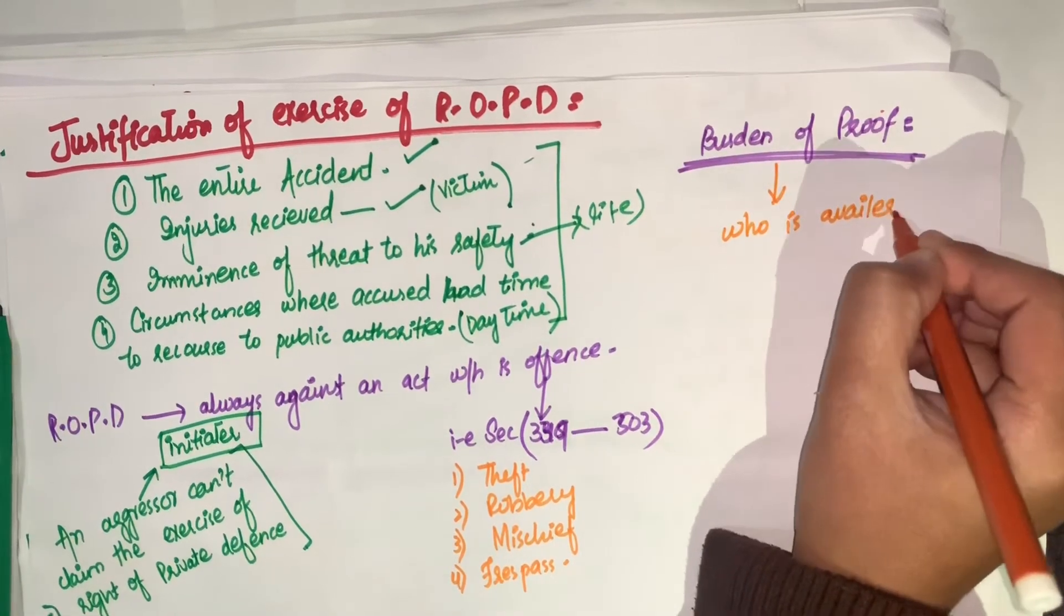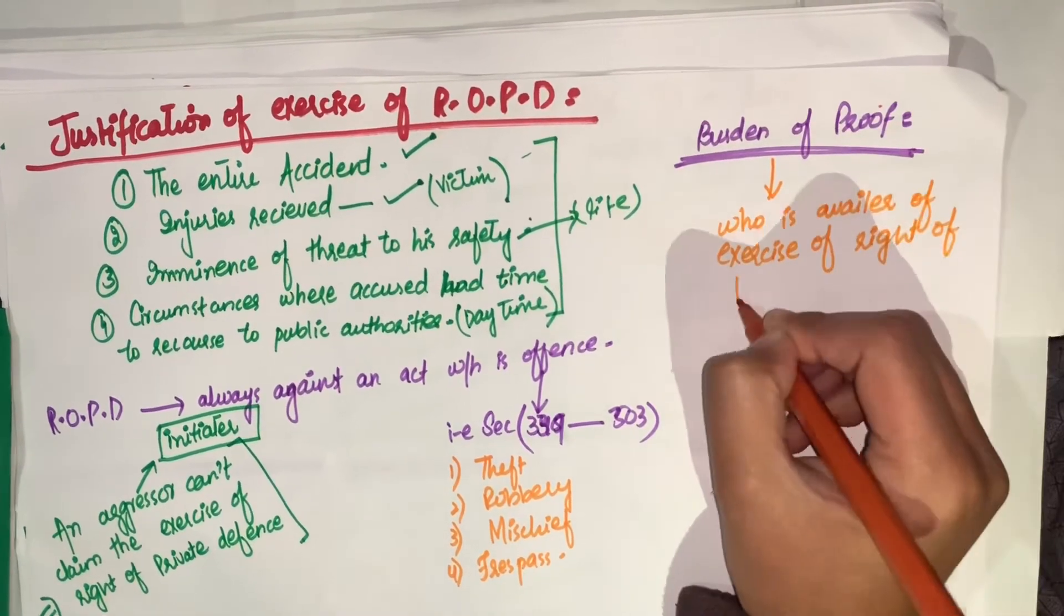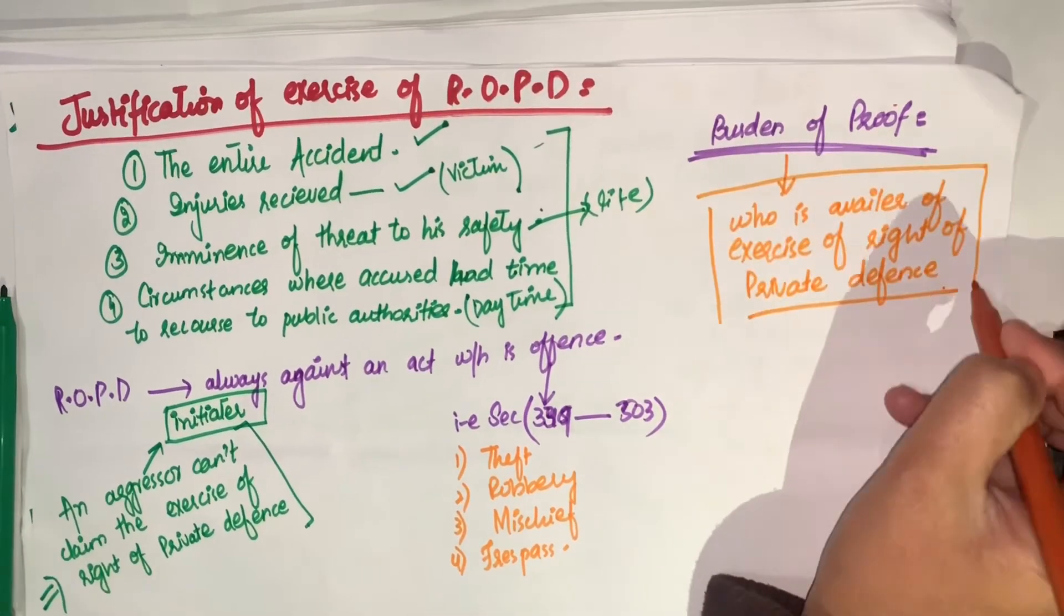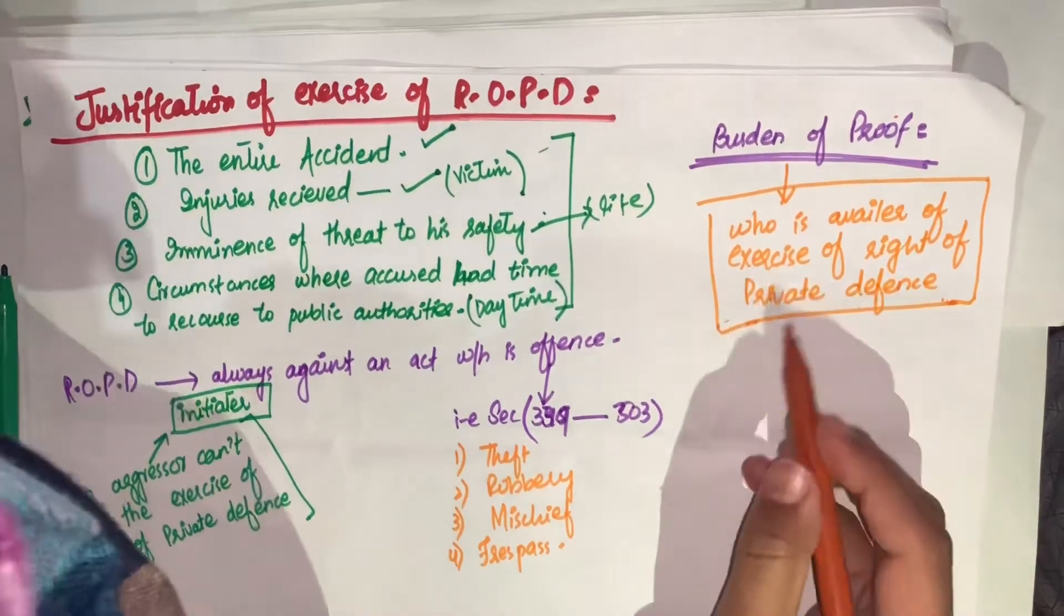So, the burden of proof will lie on the person who is the availer of right of private defense. Means, burden of proof हमेशा उस बंदे पर होगा जिसने right of private defense को exercise किया, जिसने right of private defense को हासिल किया है.